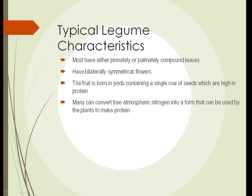The legumes have typical characteristics. If you see these characteristics in a plant you can be almost certain that you're looking at a legume. They have either pinnately or palmately compound leaves, most of them. They have bilaterally symmetrical flowers. The fruit of a legume is born in pods and the pods contain a single row of seeds. The seeds happen to be high in protein, and many legumes have the ability to convert free atmospheric nitrogen into a form that can be used by plants to make proteins.